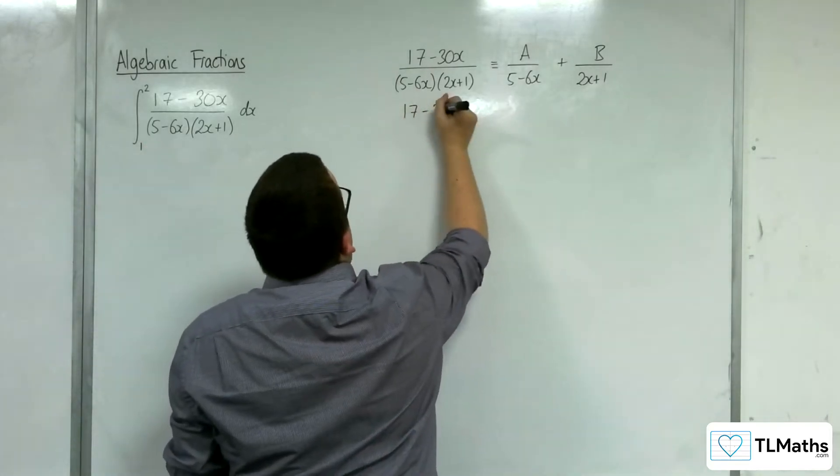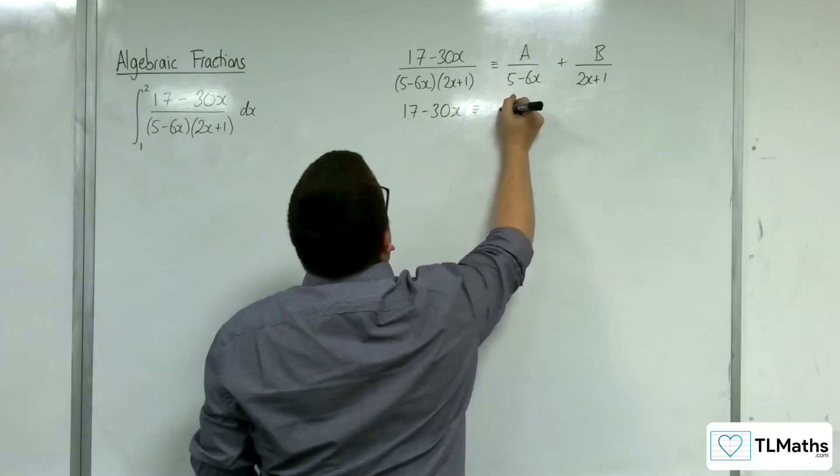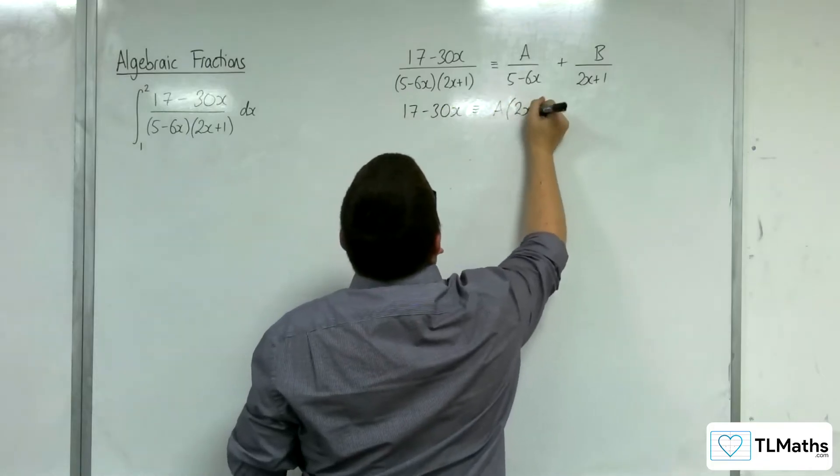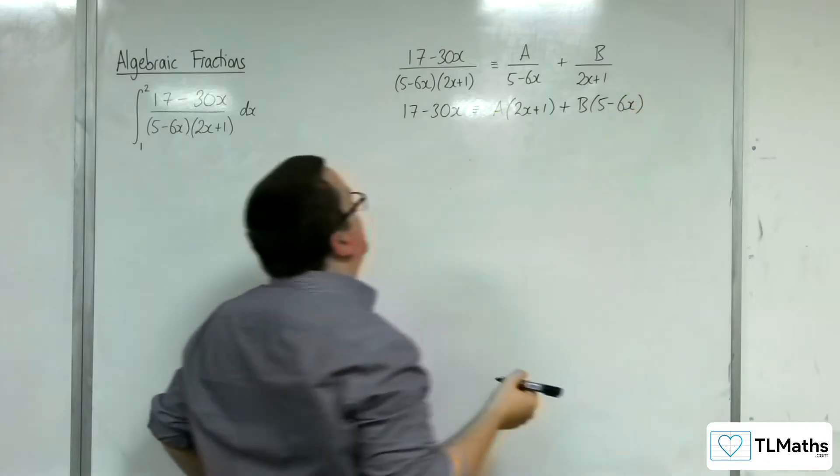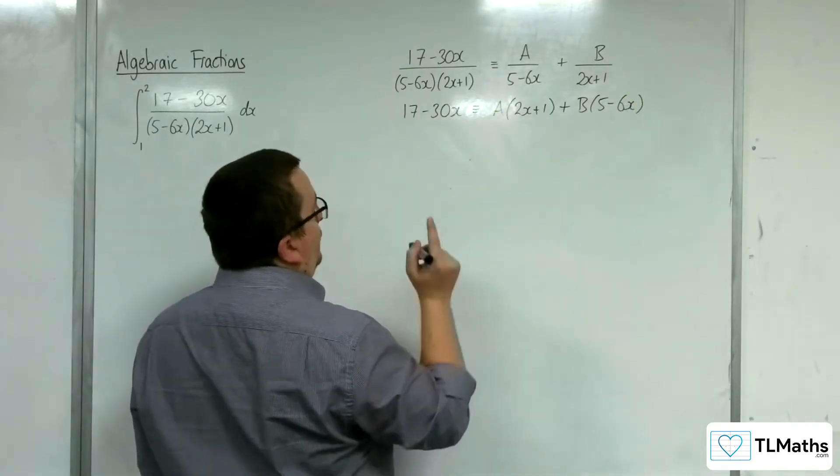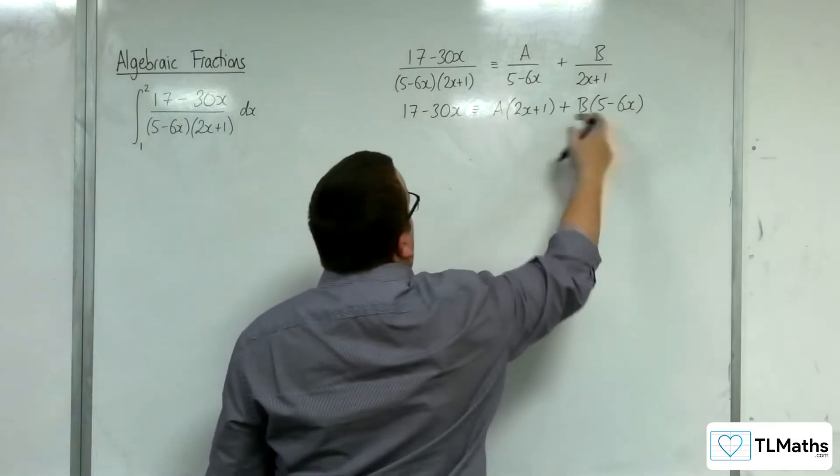So, multiplying up by the two brackets, we'll get a lots of 2x plus 1 and b lots of 5 take 6x. So let's choose some values of x to knock out the brackets. So let's take out this one first.